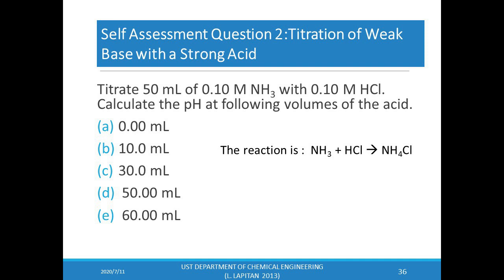Before doing any calculations for a weak base/strong acid titration, find the volume required to reach the equivalence point to identify pre- and post-equivalence regions. The computations are similar to the weak acid/strong base case; the key difference is knowing which species are in excess or coexisting at each region. Before any titrant is added, the solution is a weak base, so use the Kb expression to calculate hydroxide ion concentration, then determine the hydronium ion concentration, and finally use the pH equation.